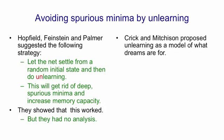Francis Crick, one of the discoverers of the structure of DNA, and Graham Mitchison proposed that unlearning might be what's going on during REM sleep — that is, rapid eye movement sleep. The idea was that during the day you store lots of things and you'll get spurious minima. Then at night you put the network in a random state, you settle to a minimum, you unlearn what you settled to, and that actually explains a big puzzle.